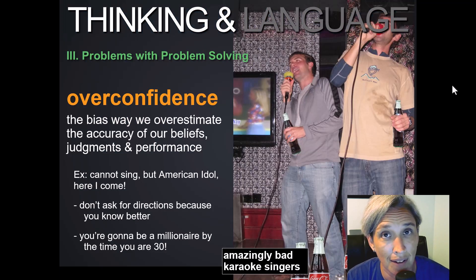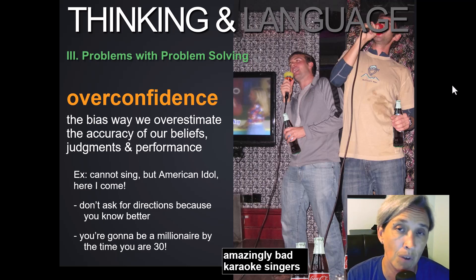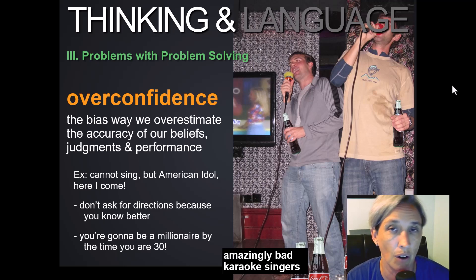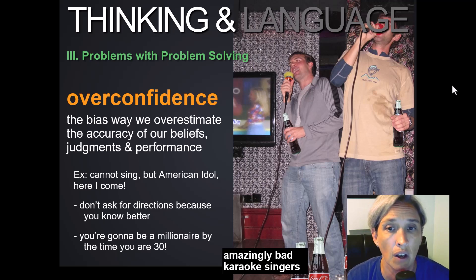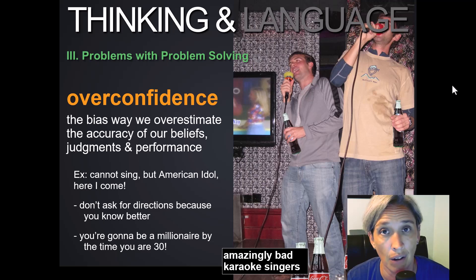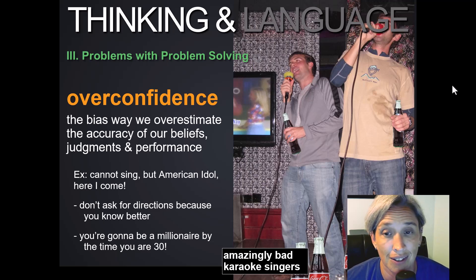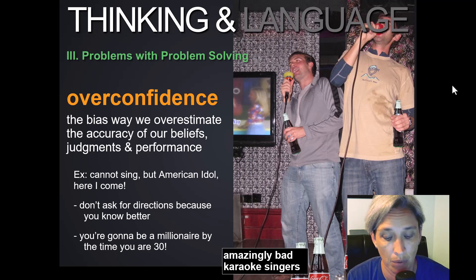Another way that we solve problems ineffectively is that we believe we know more than we do — we are guilty of overconfidence. Overconfidence is the bias where we overestimate the accuracy of our beliefs, our judgment, or our performance, or we might believe that more people agree with us than actually do. For example, people who sing karaoke think they're excellent singers and then get in front of a crowd and maybe not so much. We don't like to ask for directions because we don't want to look stupid, and we might believe we'll be millionaires by age 30.